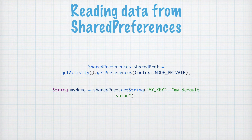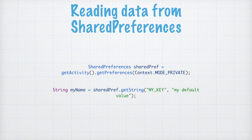To read data from shared preferences, first we need to get an instance: sharedPref = getActivity().getPreferences(). There is also a method called getSharedPreferences(). If you want only one preference to be stored, use getPreferences(); if you want multiple preferences to be stored, use getSharedPreferences().